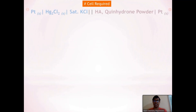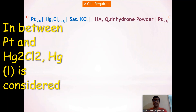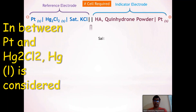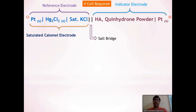Now let's discuss part one. As this is the potentiometric titration of strong acid versus strong base, this requires an electrochemical cell. The cell representation is: platinum(s) | Hg₂Cl₂(s) | saturated KCl ‖ HA, quinhydrone powder | platinum(s). This cell representation is a combination of two electrodes — the reference electrode and the indicator electrode — and a salt bridge. The saturated KCl electrode acts as the reference electrode while the quinhydrone electrode acts as the indicator electrode.